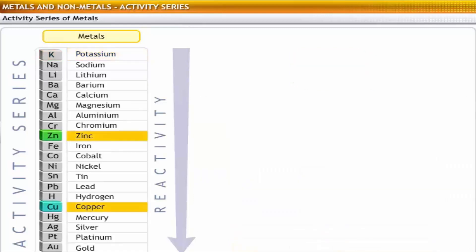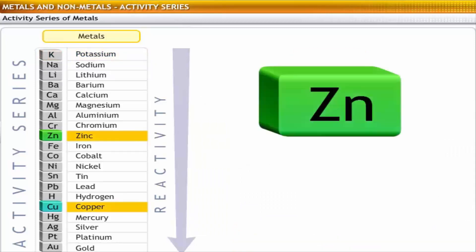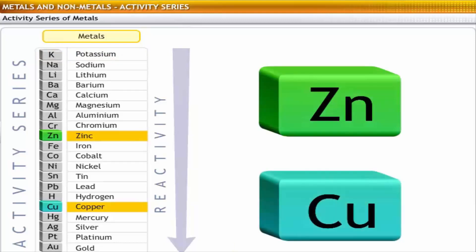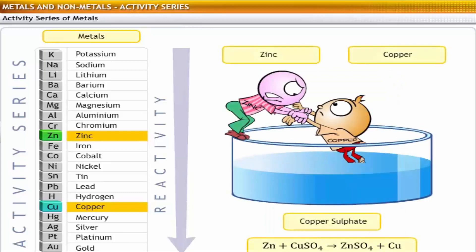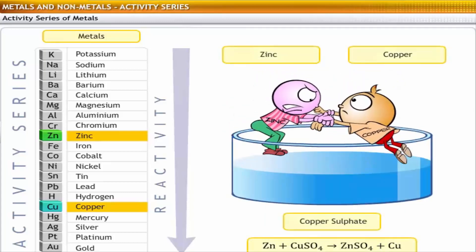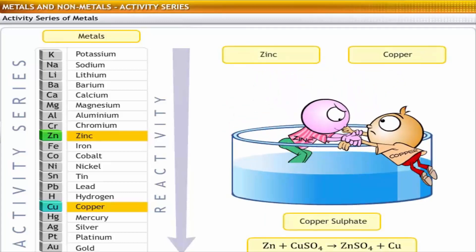For any two metals in the series, the metal placed higher in the series can displace the other metal from its salt solution. For example, zinc displaces copper from copper sulphate solution to form zinc sulphate.